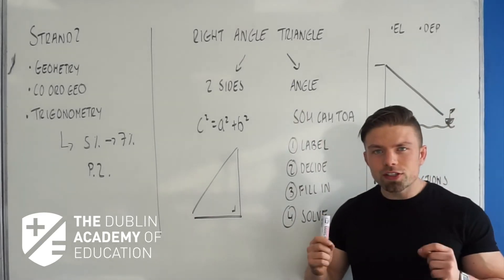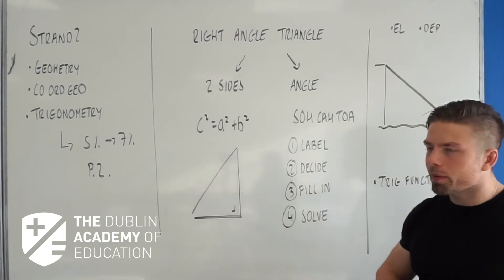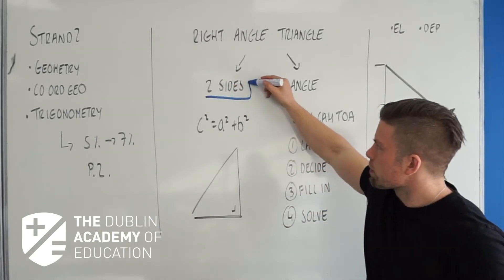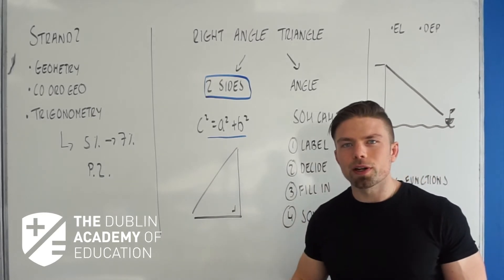First of all we are only dealing with right angle triangles. If the triangle in question gives us two sides and we're looking for a third, it has to be Pythagoras and that is in your formula and tables booklet.